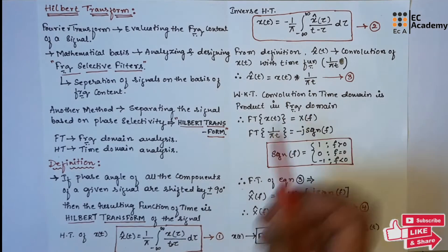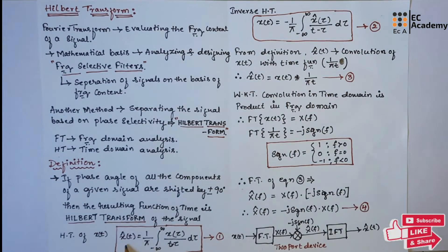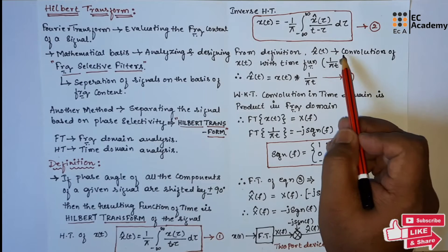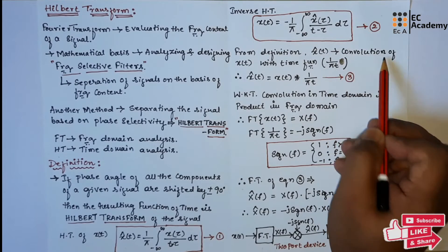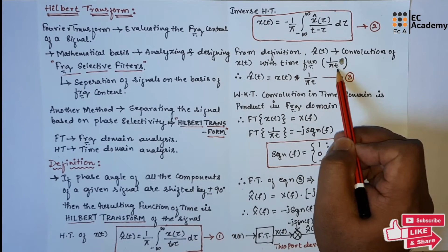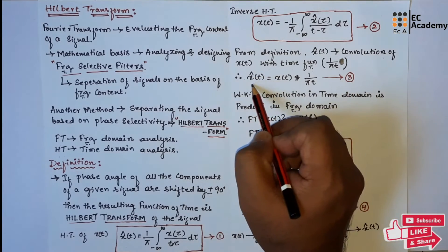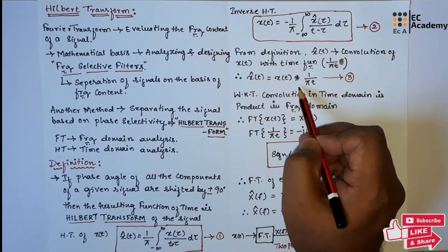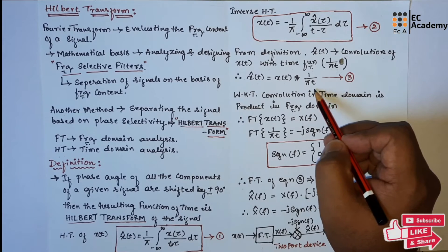From the definition of Hilbert transform, x̂(t) is the convolution of x(t) with the time function 1/(πt). So we can write x̂(t) = x(t) * 1/(πt) — let us take this as equation 3.